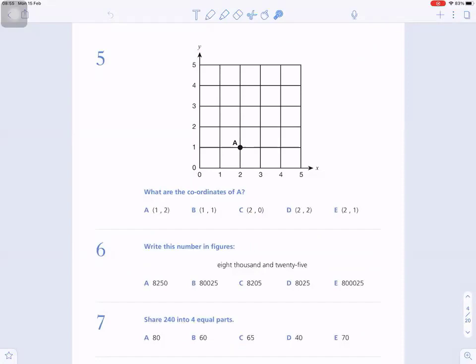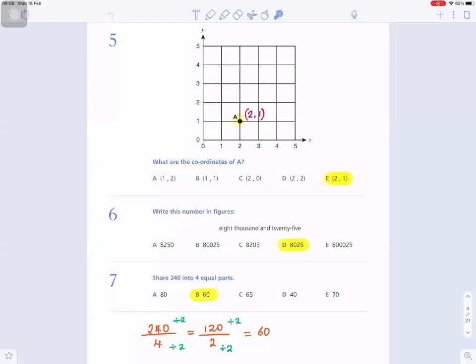These are questions 5 to question 7. Question 5: What are the coordinates of point A? The point A is 2, 1 - you go 2 to the right and 1 up. Along the corridor, up the stairs, so the coordinates is 2, 1.